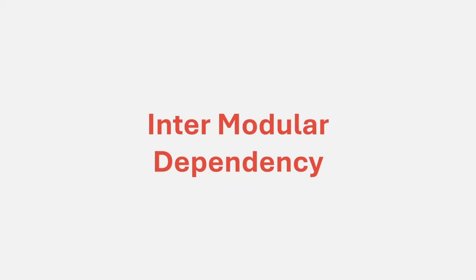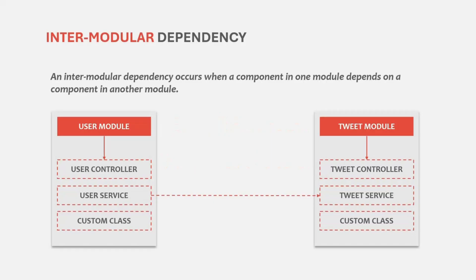In the last lecture, we learned about different types of dependencies in NestJS, and one of the dependency types was intermodular dependency. In an intermodular dependency, a component in one module depends on a component in another module. Here we have two modules — user module and tweet module — and in the tweet service, we want to use the user service of the user module. This is called intermodular dependency.